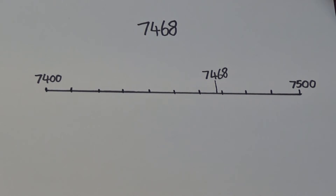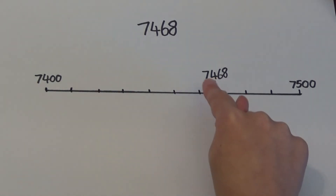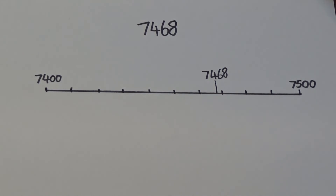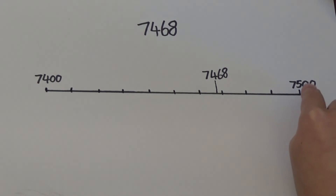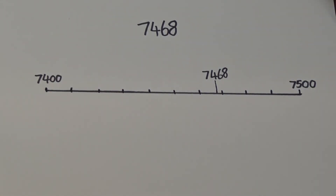Four hundred and sixty-eight is just under four hundred and seventy, so I've worked out where four hundred and seventy is and written seven thousand four hundred and sixty-eight just before. We can see four hundred and sixty-eight is closer to five hundred than it is to four hundred, so seven thousand four hundred and sixty-eight rounds up to seven thousand five hundred when rounding to the nearest hundred.